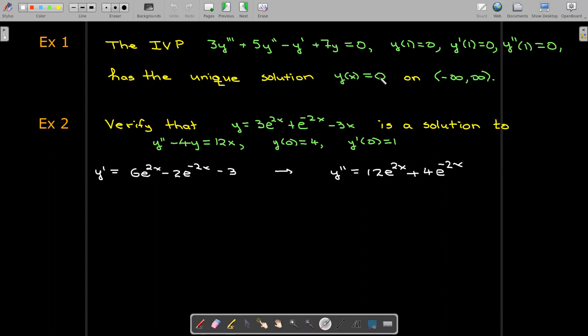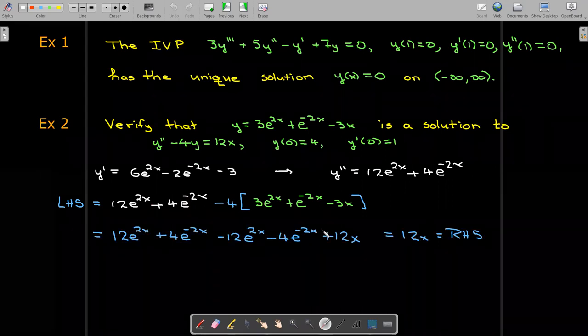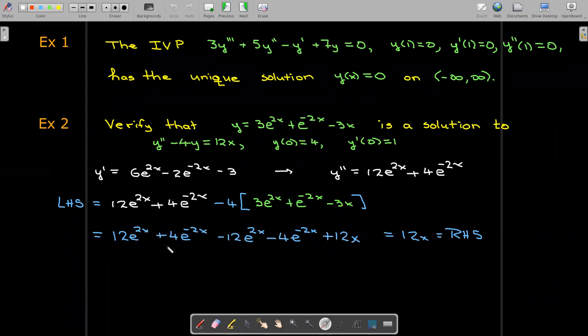So let's take the first and second derivative of the given function for y and substitute it into the given differential equation. So our left hand side would be this is our y double prime minus 4y and do some algebra. Let's remove the brackets there and collect the like terms.